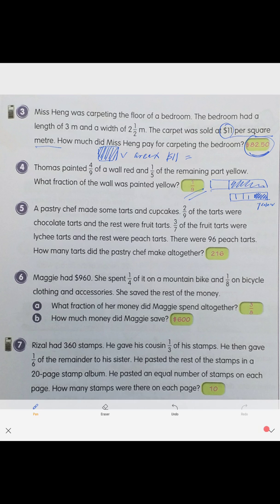Next one: A pastry chef made some tarts and cupcakes. This amount of the tarts were chocolate tarts and the rest were fruit tarts. 3/7 of the fruit tarts were lychee tarts and the rest were peach tarts. There were 96 peach tarts.